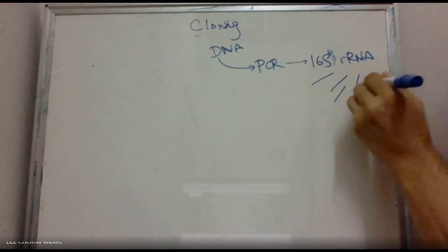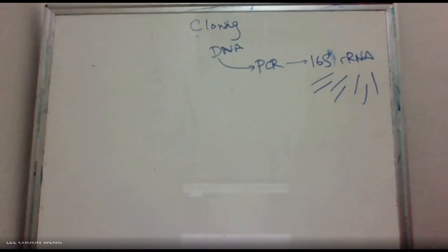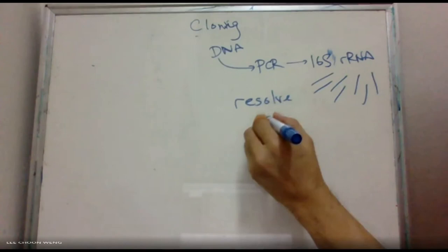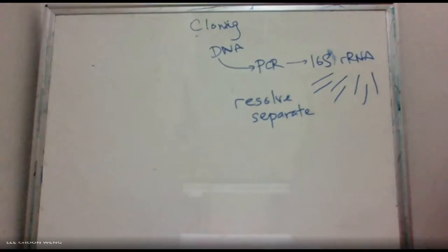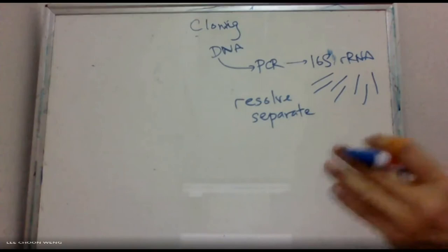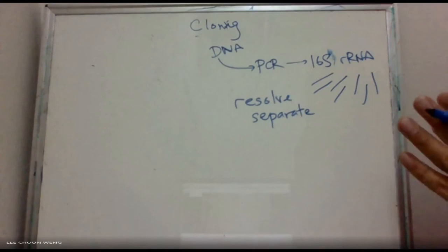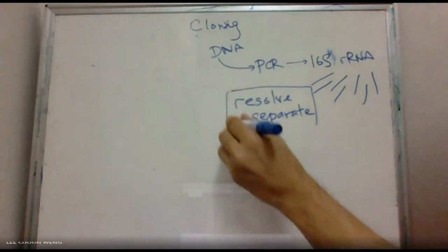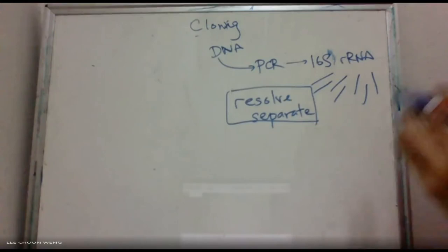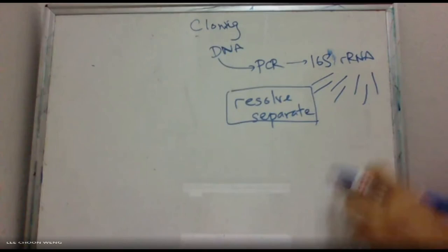If you know there is only one band, why do you still run the gel? You don't know whether there is any contamination, and you run the gel after PCR to see how clean your product is before sending for sequencing or doing the next step. All the approaches mentioned — SSCP, DGGE, cloning, high-throughput sequencing — differ in how they separate the 16S amplicons: how they carry out the resolution and separation.